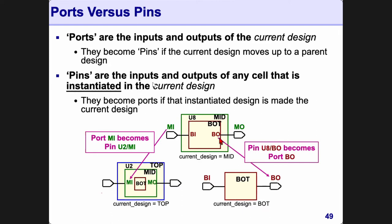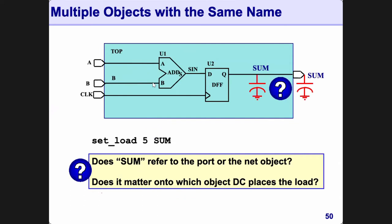So the question for you: here we have a net called 'sum' and an output port also called 'sum' — both share the same name. If you do: set_load 5 sum — which tells DC the load on object sum is 5 — what is 'sum' referring to: the port or the net?